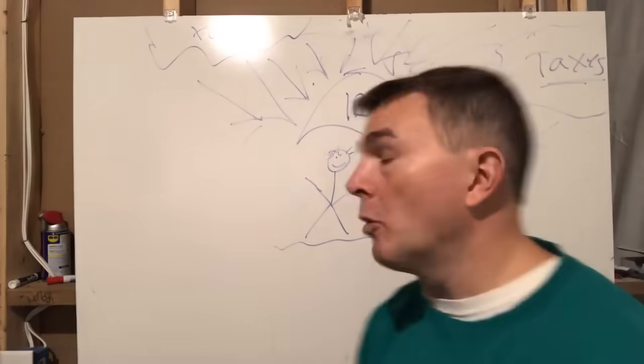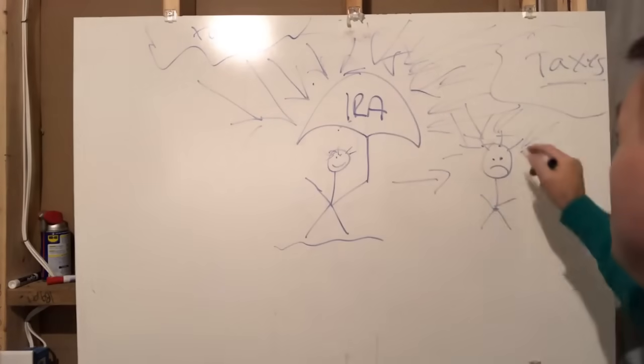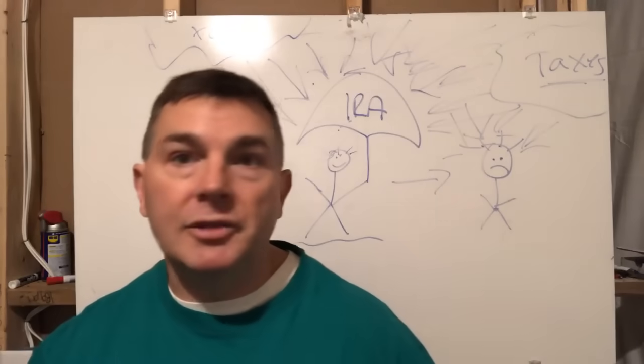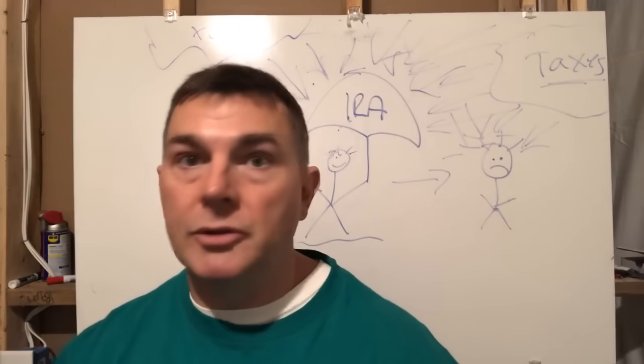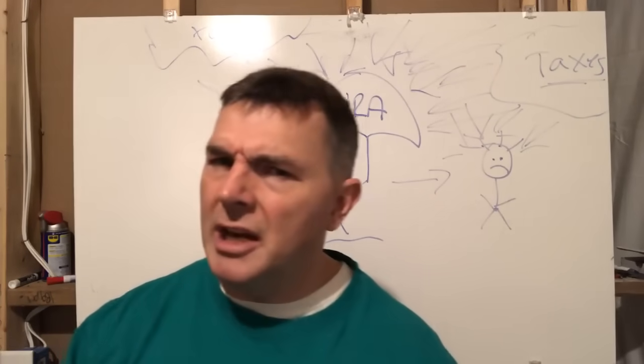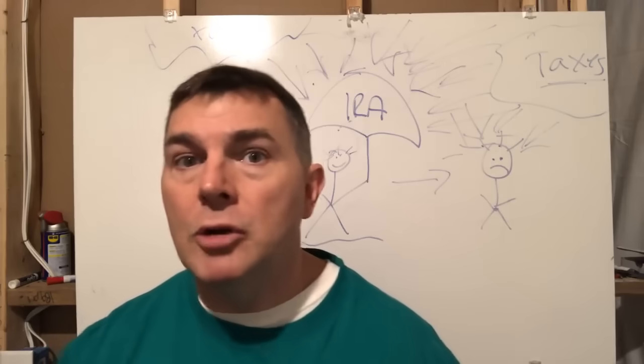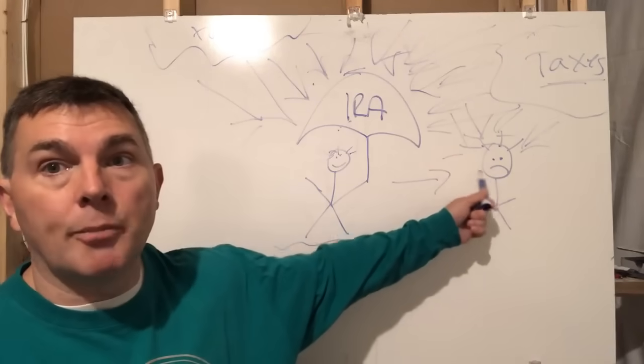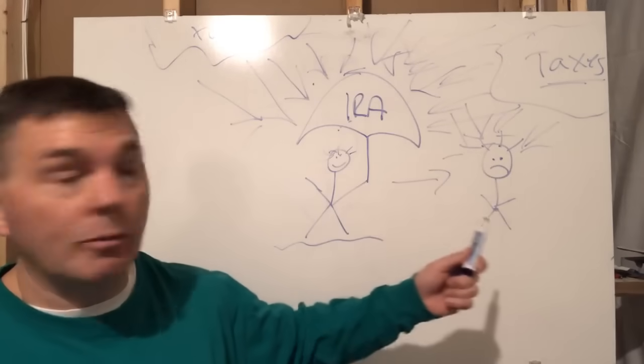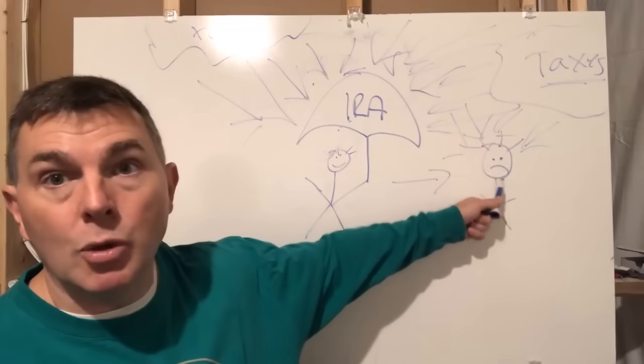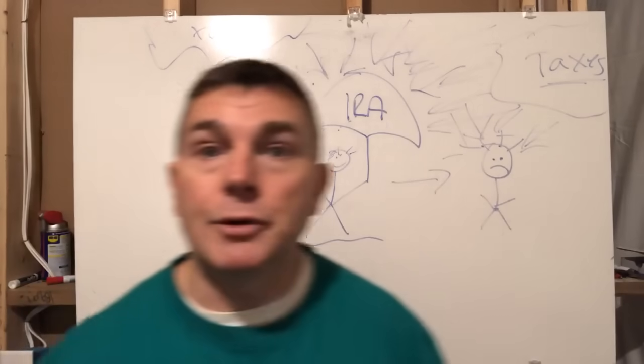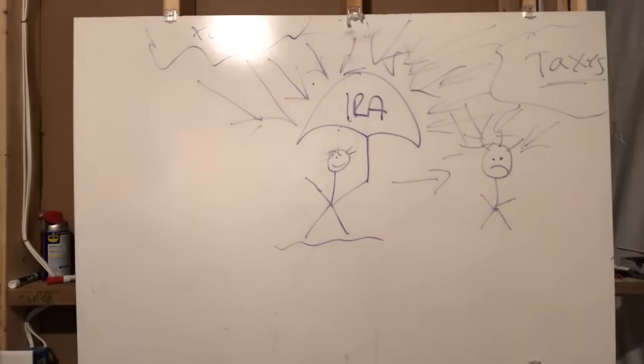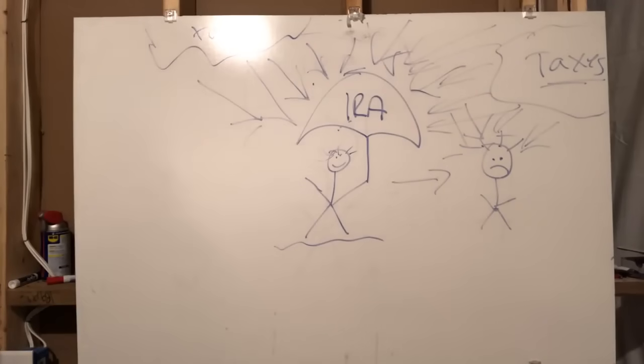Now with a traditional IRA or 401k, you're being shielded from taxes, but you're going to have to pay taxes on the back end. So there's two different choices for you. Obviously, if you've been following the YouTube channel, read my books, you know I love the Roth for sure. But either way, how do I actually get the money out? And here's where it's going to come.